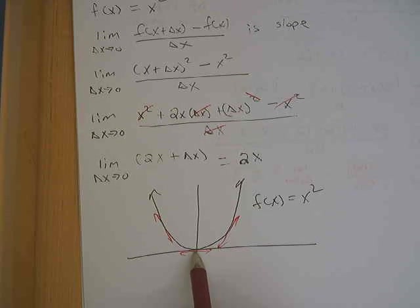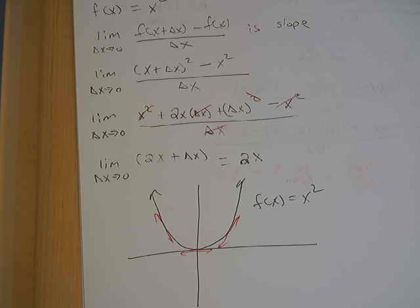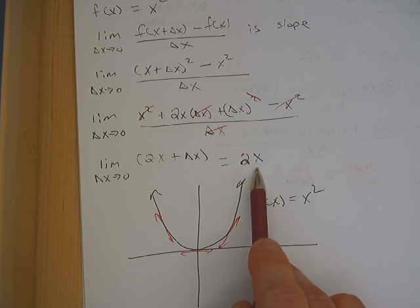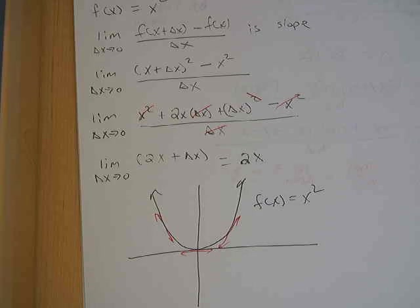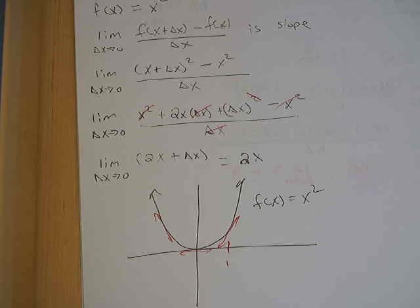So, if I want to know, for example, what's the slope of the tangent line at x equals 0? I just drew it here. What is the slope of the tangent line at x equals 0? 0. We can see it. But if I put 0 in for x here, it tells me the slope of the tangent line is 0.